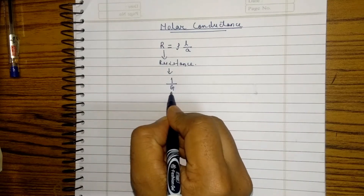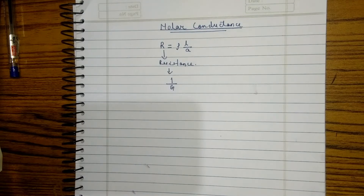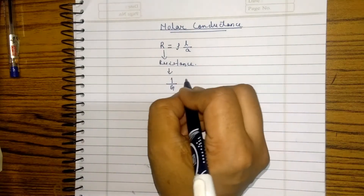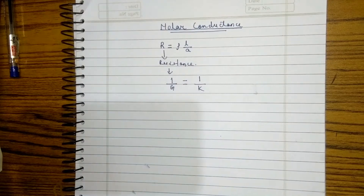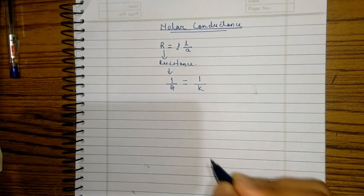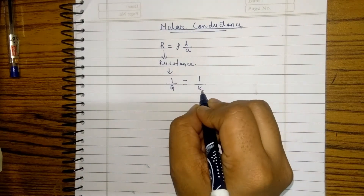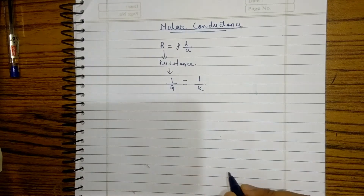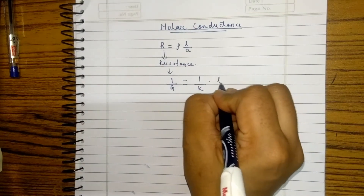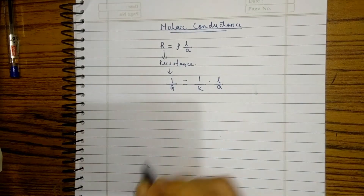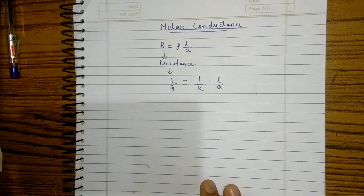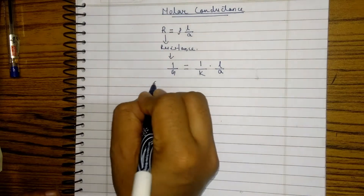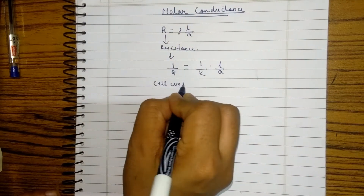Conductance is represented as G. Rho can be represented as 1 by kappa, which is also known as conductivity or specific conductance, multiplied by L by A, where the term L by A represents the cell constant.